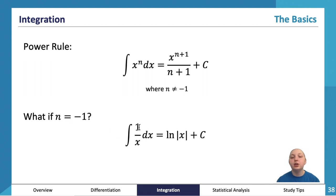What if n = -1? Then you end up with 1 over x, and the integral of that is ∫(1/x) dx = ln|x| + C.